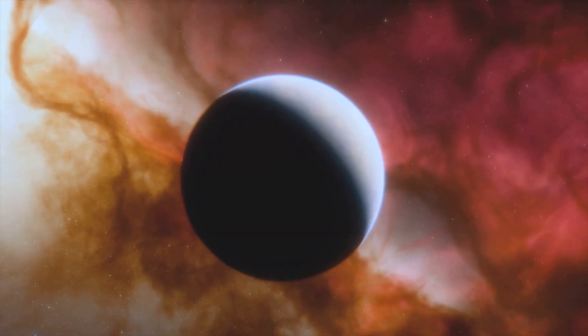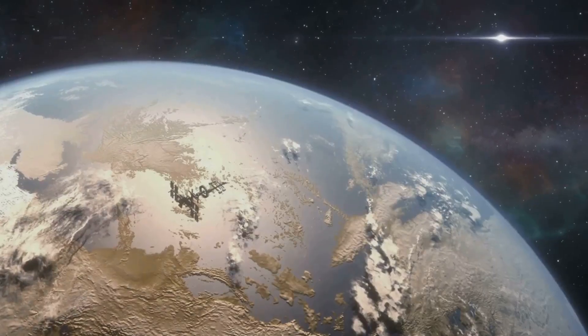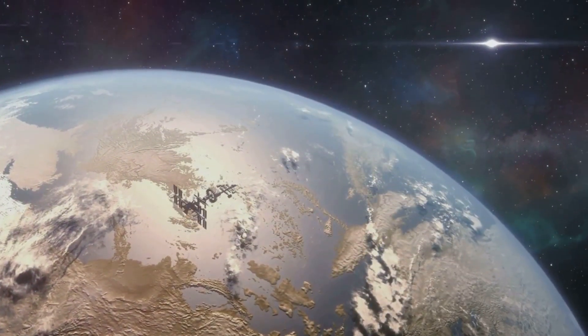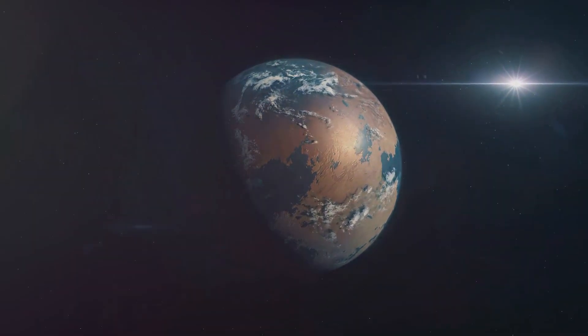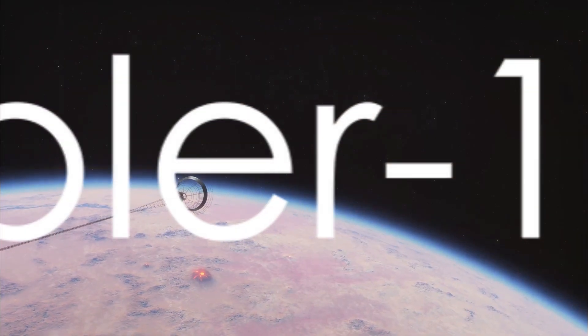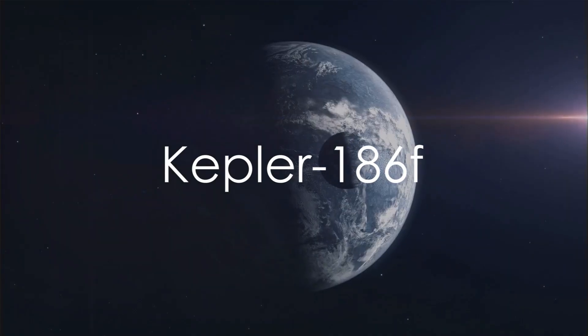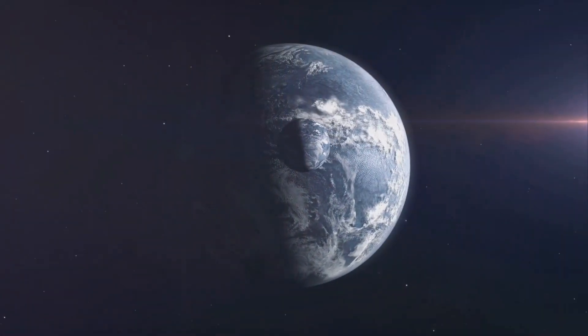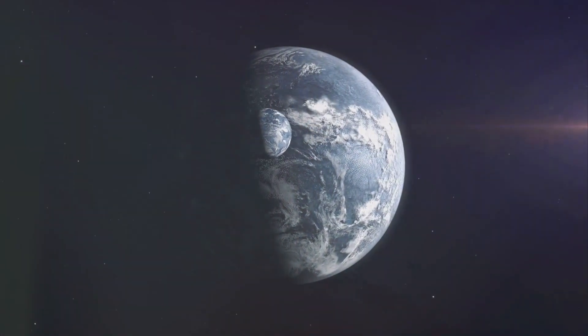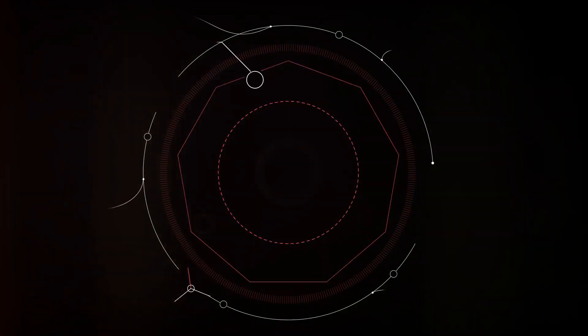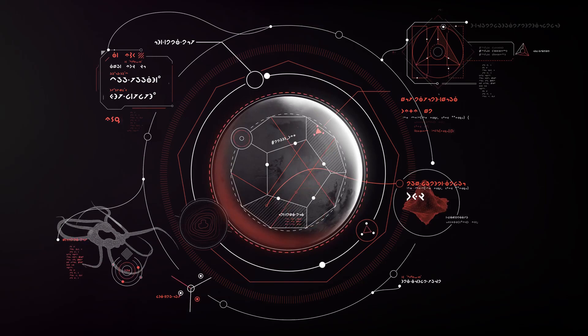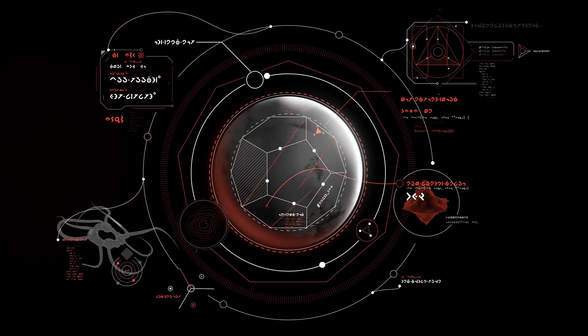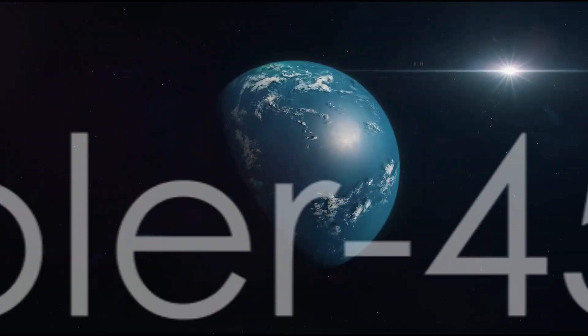Coming in at number seven is Proxima Centauri b. This exoplanet is the closest to Earth at just over four light years away. It orbits in the habitable zone of its star Proxima Centauri and could potentially have liquid water on its surface. At number six, we encounter Kepler 186f. This exoplanet is similar in size to Earth and sits within the habitable zone of its star.